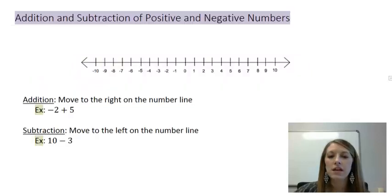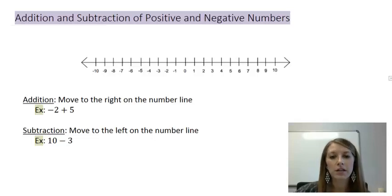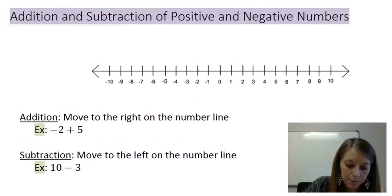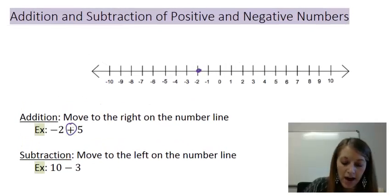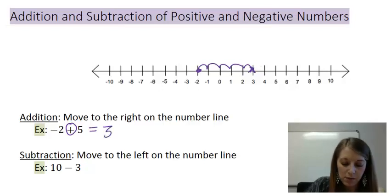The first thing is how do we reference the number line? It's as simple as: if we are trying to add numbers, we move to the right on the number line, and if we subtract numbers, we move to the left. For example, if I start with negative 2 and I want to add 5, I move to the right 5 units — 1, 2, 3, 4, 5 — and I end up with 3. So negative 2 plus 5 gives me 3.